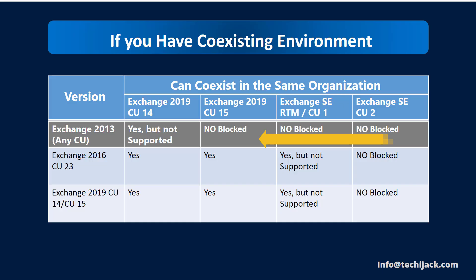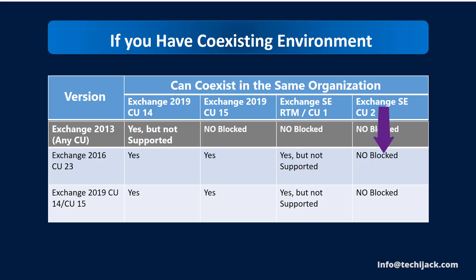The same blocking also applies to CU2 for the subscription edition with Exchange 2013. If you have Exchange 2016 running on CU23, Exchange 2019 CU14 can coexist, and Exchange 2019 CU15 can also coexist. Exchange SE RTM and CU1 can coexist but are not supported. After you install Exchange SE CU2, Exchange 2016 will no longer be supported for coexistence.